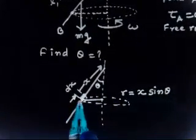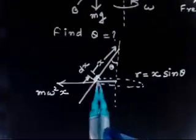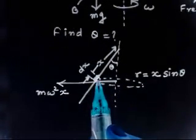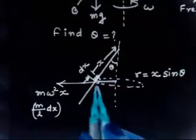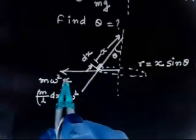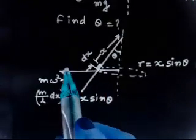Now you will have a centrifugal force acting outward. The mass of the small element dx is (M/L)dx. So the centrifugal force on that element is (M/L)dx · ω² · r, where r is x sin theta. So the centrifugal force on element dx is (M/L)dx · ω² · x sin theta.